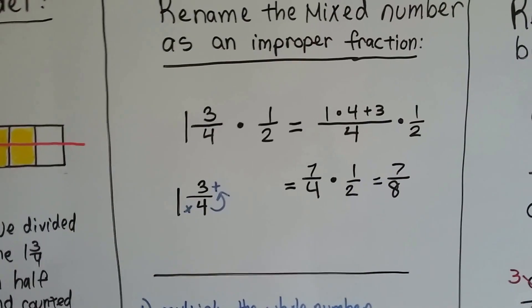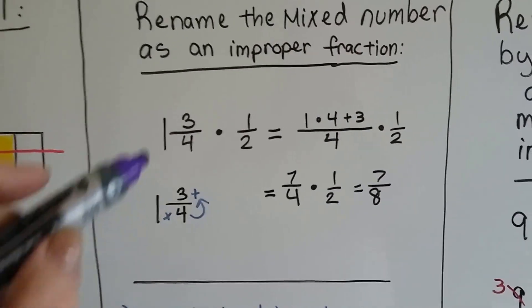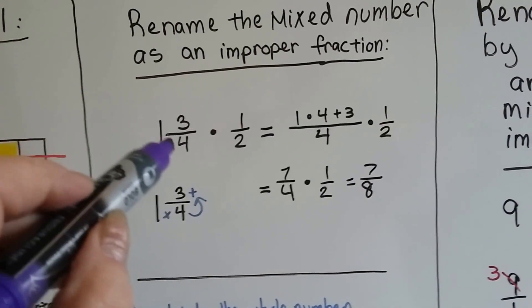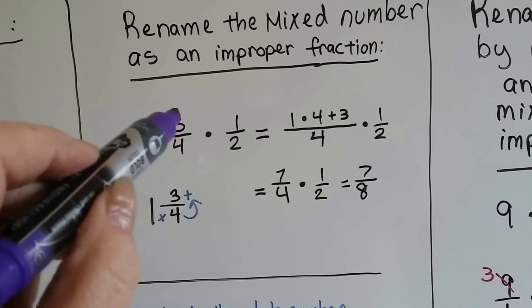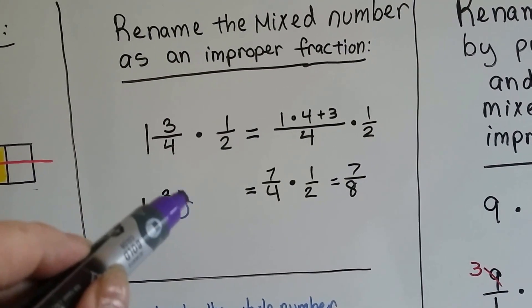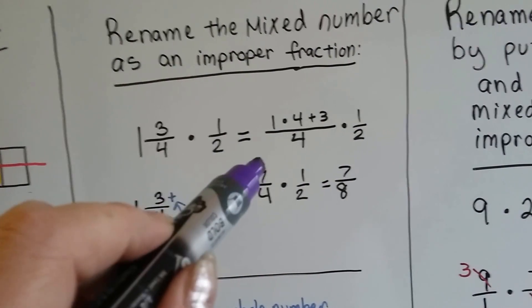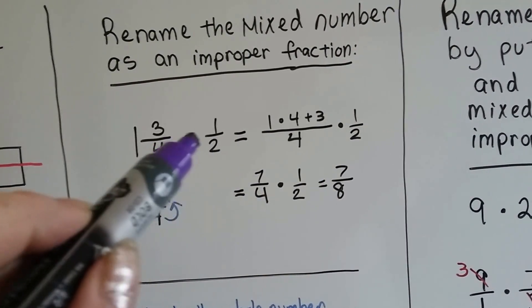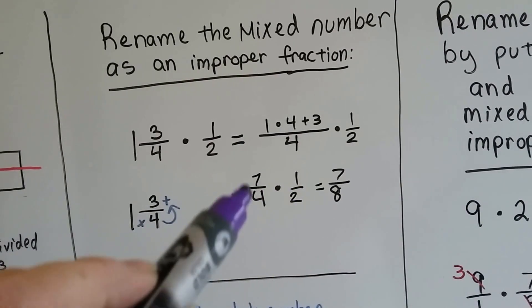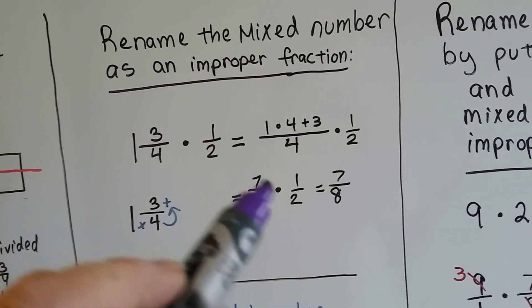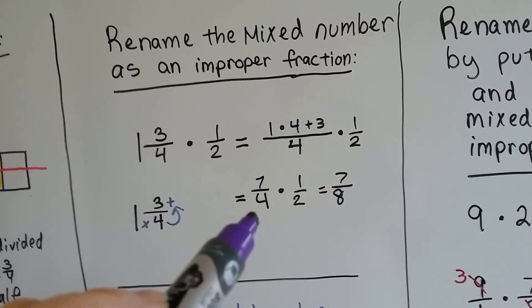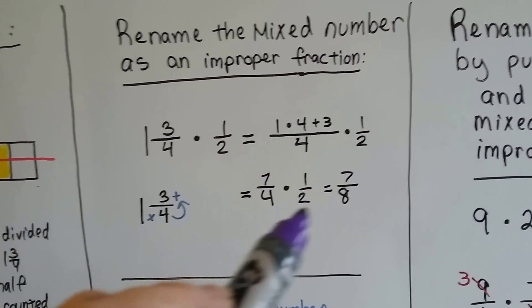We can rename the mixed number as an improper fraction. If you remember this, we just multiply the whole number by the denominator and add the numerator. We multiply 1 times 4 is 4, plus 3 is 7, and we get 7 fourths. Now we just multiply that by the half and go straight across, or cancel out if it's possible, but it's not in this one because 7 and 2 don't have common factors and neither do 1 and 4. So we get 7 eighths.